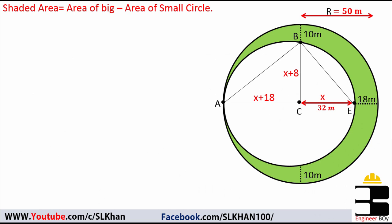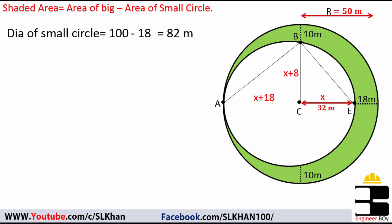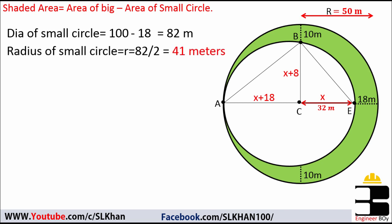Now the diameter of the small circle must be 100 — which is the diameter of the big circle — minus 18, which is that small part of the shaded area. So the diameter of the small circle equals 82 meters, and the radius must be 82 divided by 2, which is 41 meters.